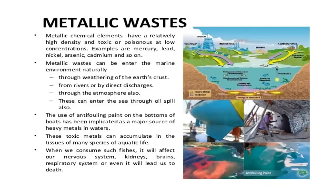Metallic chemical waste released from industry — some industries use nickel, arsenic, and cadmium — is deposited in the sea, where it is consumed by fish. It can affect the nervous system and kidneys due to high accumulation. Small fish consume this metallic waste, then small fish are eaten by large fish, and large fish are eaten by mammals or human beings — this is bioaccumulation or biomagnification. It can affect the nervous system, kidneys, brain, and respiratory system, or even lead to death.